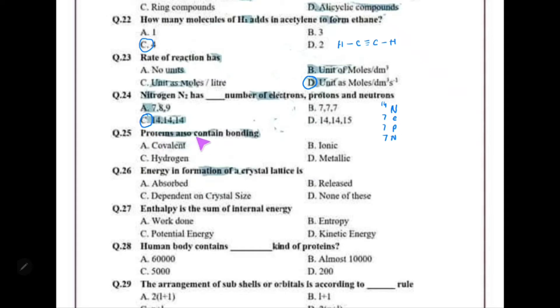Proteins also contain which type of bonding? Covalent bonds are present in proteins, and along with that, hydrogen bonds are also present in them.